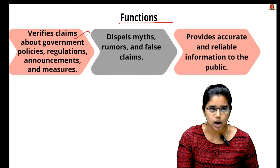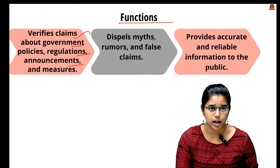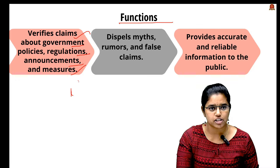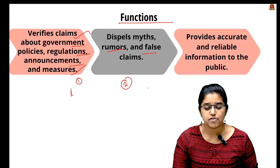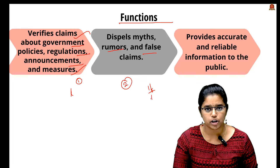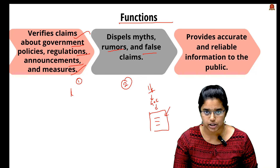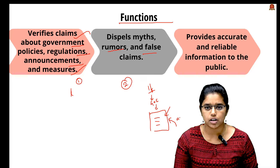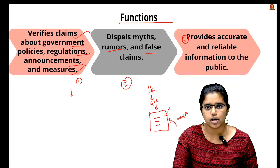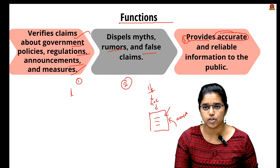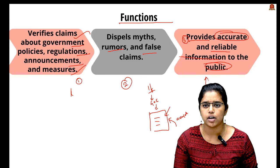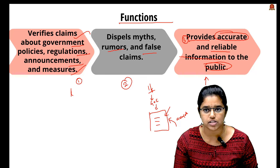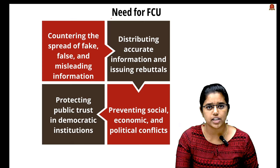The functions of the Fact Check Unit include: first, verifying claims about government policies, regulations, announcements, and measures. Second, dispelling myths, rumors, and false claims — if there is false information about Government of India policies, they publish a notice on the PIB stating it is false and provide accurate information on the topic. Third, providing accurate and reliable information to the public through the PIB Fact Check portal.